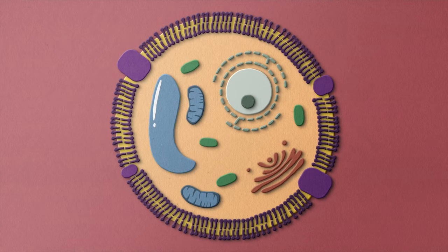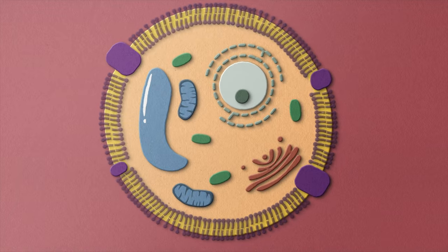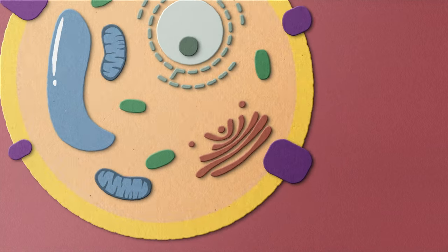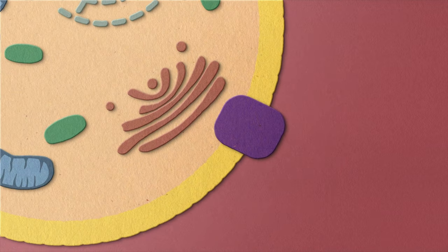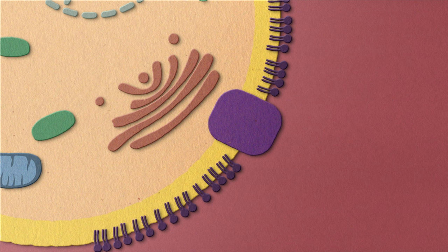The main thing that phospholipids do is act as a primary component of cell membranes. Phospholipids put their heads together, literally, on the outside of the cell, with their double tails together towards the inside.